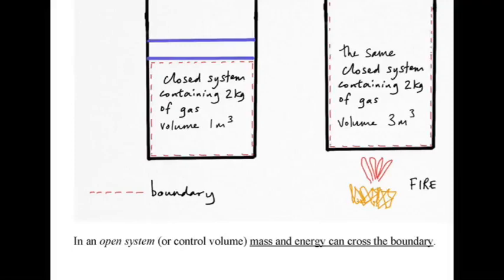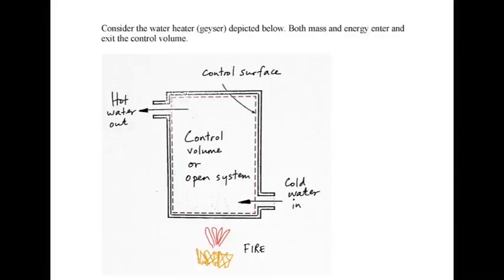In an open system, sometimes called a control volume, mass as well as energy can cross the boundary. As an example, consider one of these old-fashioned water geysers, sometimes called a donkey, where you light a fire under a vessel and pump water in and water exits — obviously hotter when it leaves. Both mass and energy enter and exit the control volume, which is a little more complicated than the closed system.